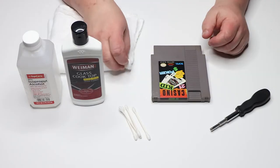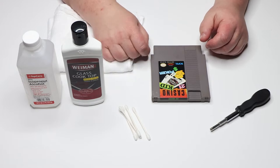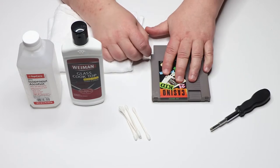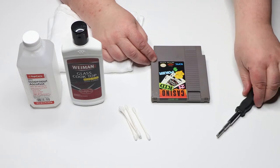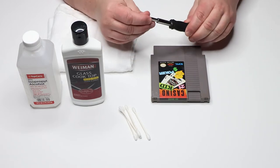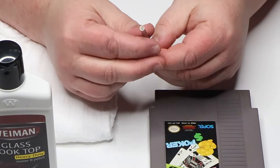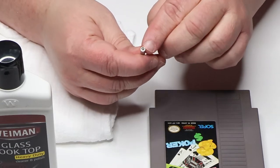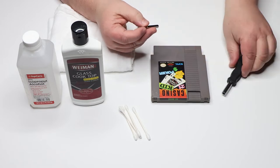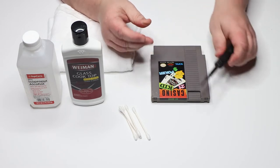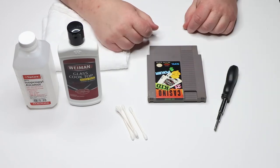Here we are at the workbench. We have a few implements here that we're going to use to clean the cart. Obviously we have the dirty cart itself that needs to be cleaned. This is a game bit driver - a 3.5 millimeter special security bit. You can get those at any video game store or online. I will put a link in the description to where you can get them on Amazon.